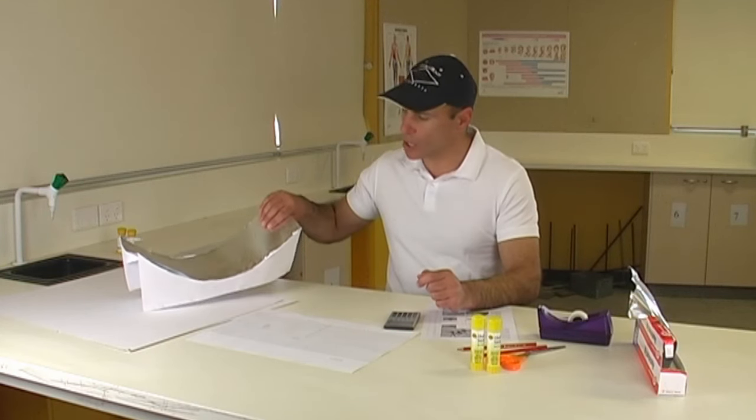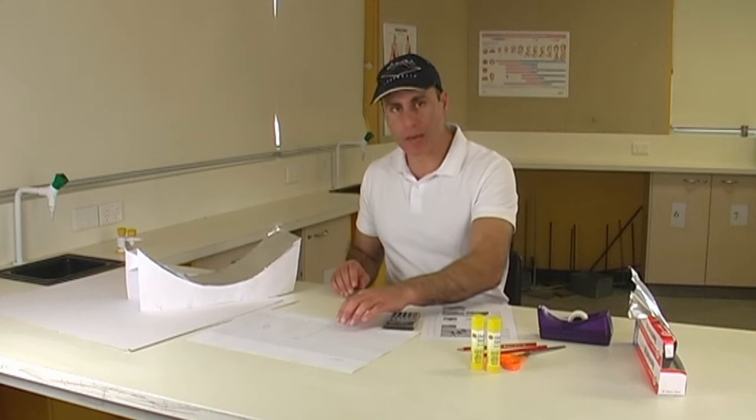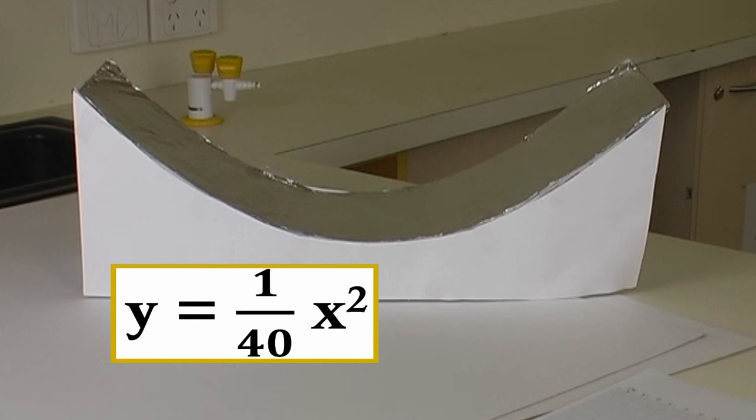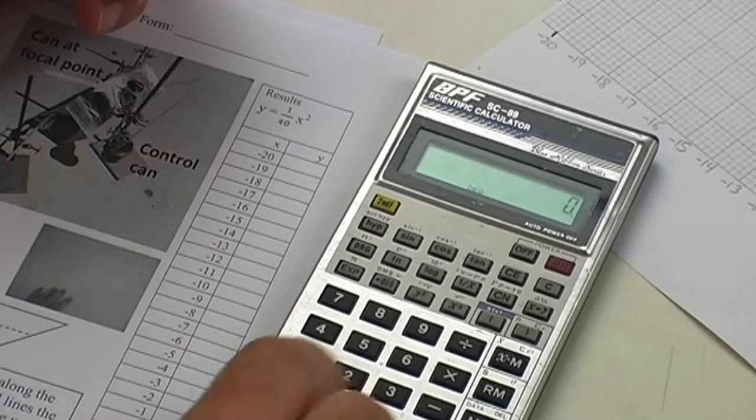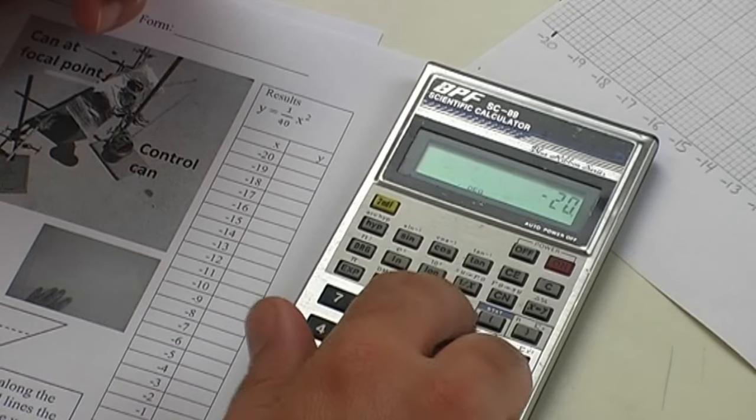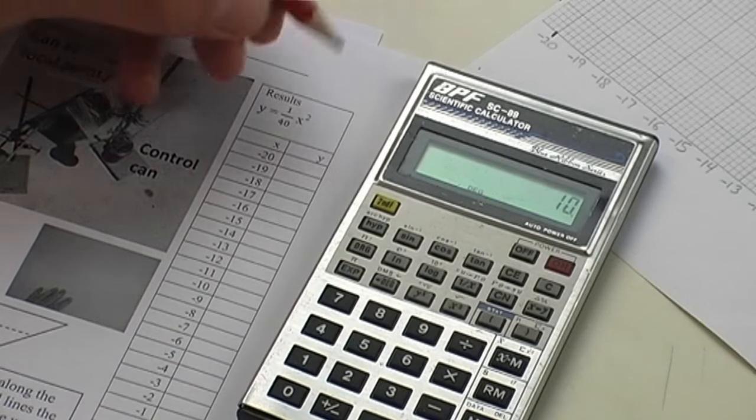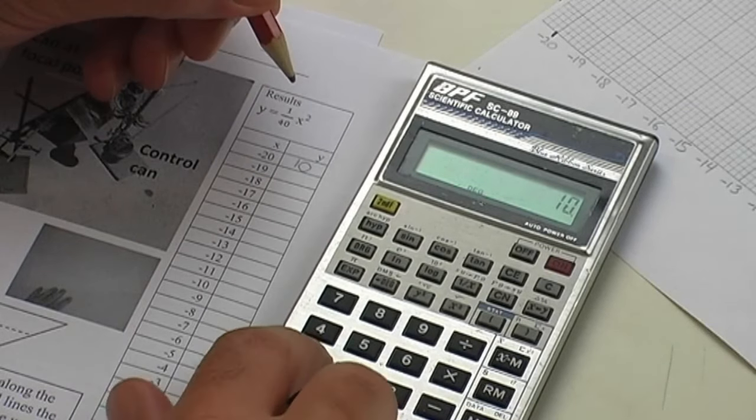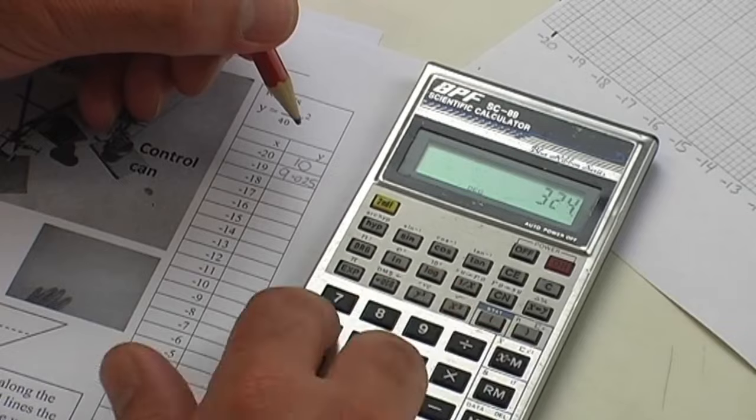Let's now use our knowledge of the mathematics of parabolas to make a simplified parabolic reflector, called a linear parabolic reflector, using some graph paper, cardboard, and aluminum foil. We're going to use the equation y equals one-fortieth x squared, which will give us a parabola of focal length ten centimeters. The parabola will be used to focus sunlight to heat up some water. Firstly, calculate all the y values of the equation for when the x values are between negative twenty and positive twenty. This will take a few minutes.